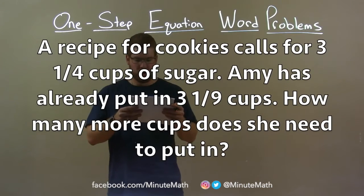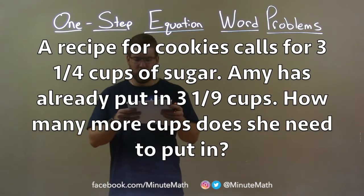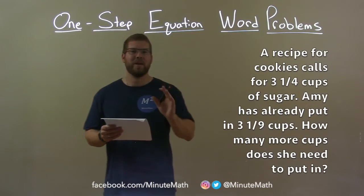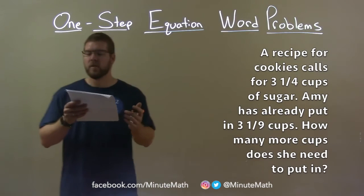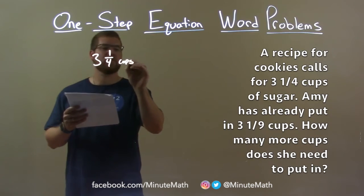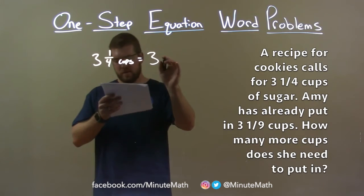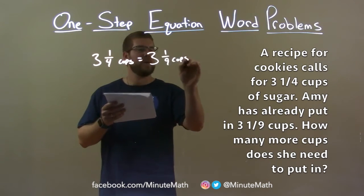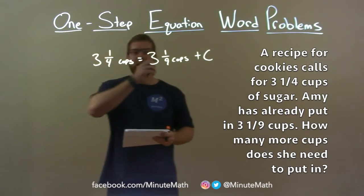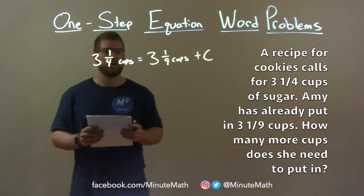A recipe for cookies calls for 3 and 1/4 cups of sugar. Amy has already put in 3 and 1/9 cups. How many more cups does she need to put in? So 3 and 1/9 cups plus C, the amount of cups she still needs to add, should equal 3 and 1/4 cups.